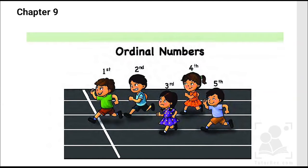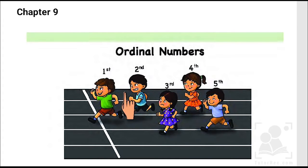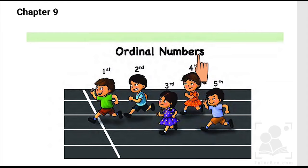Hi kids, in today's video we are going to start with chapter number nine, which is very important. Chapter number nine is about ordinal numbers. We do counting using common numbers by saying one, two, three, four, and five, but when we attach positioning to the numbers, we do it like first, second, third, fourth, and fifth. So ordinal numbers is actually the positioning of numbers.